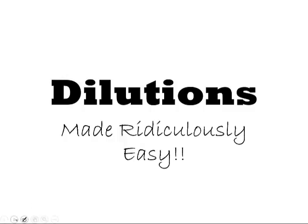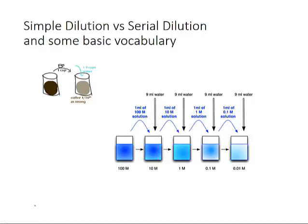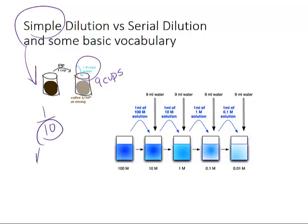Let's start with some basic vocabulary that you need to know. There's a simple dilution, which would be like if I diluted some coffee. I had some concentrated coffee and I'm going to add water, 9 cups of water. This is a 1 out of 10 dilution. Remember the bottom number is always going to be your total volume. That's very important and it's a common mistake that beginners make. The bottom number of your fraction is the total volume.